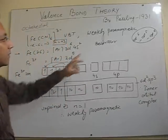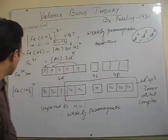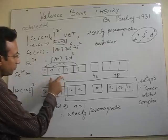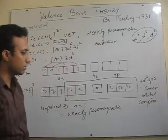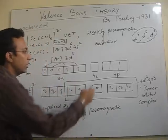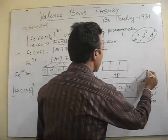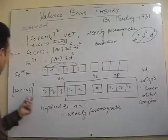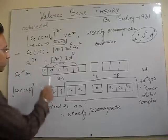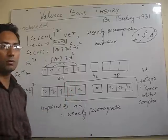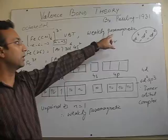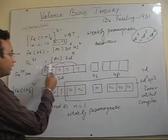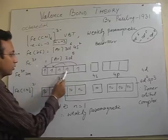In this particular case, as it is given that the complex is weakly paramagnetic, the configuration of Fe³⁺ is 3d⁵, 4s⁰, 4p⁰. If we use the outer d orbitals — that is, 5 orbitals of 4d get hybridized along with others to accommodate the 6 cyanide ligands — then the complex will have 5 unpaired electrons and will be highly paramagnetic. But it is experimentally observed to be only weakly paramagnetic. So according to VBT, we have to pair up these electrons.